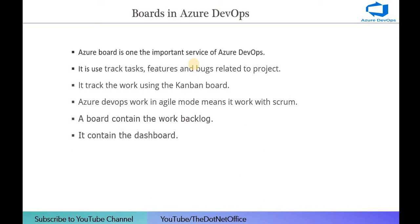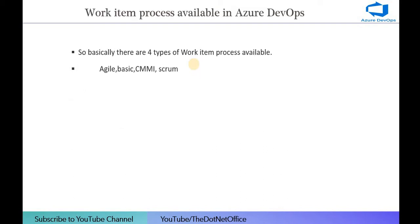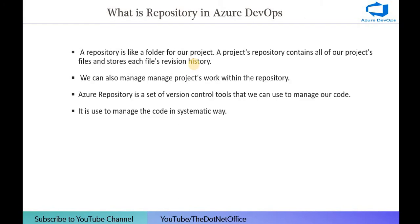What is Azure Boards? Azure Boards is one of the important services of Azure DevOps. It is used to track tasks, features, and bugs related to the project. It tracks the work using a Kanban board. Azure DevOps works in agile mode — with scrum. A board contains a backlog and a dashboard. When creating a project there are four types of work item processes available: Agile, Basic, CMMI, and Scrum. Each process contains different functionality and types of work items.